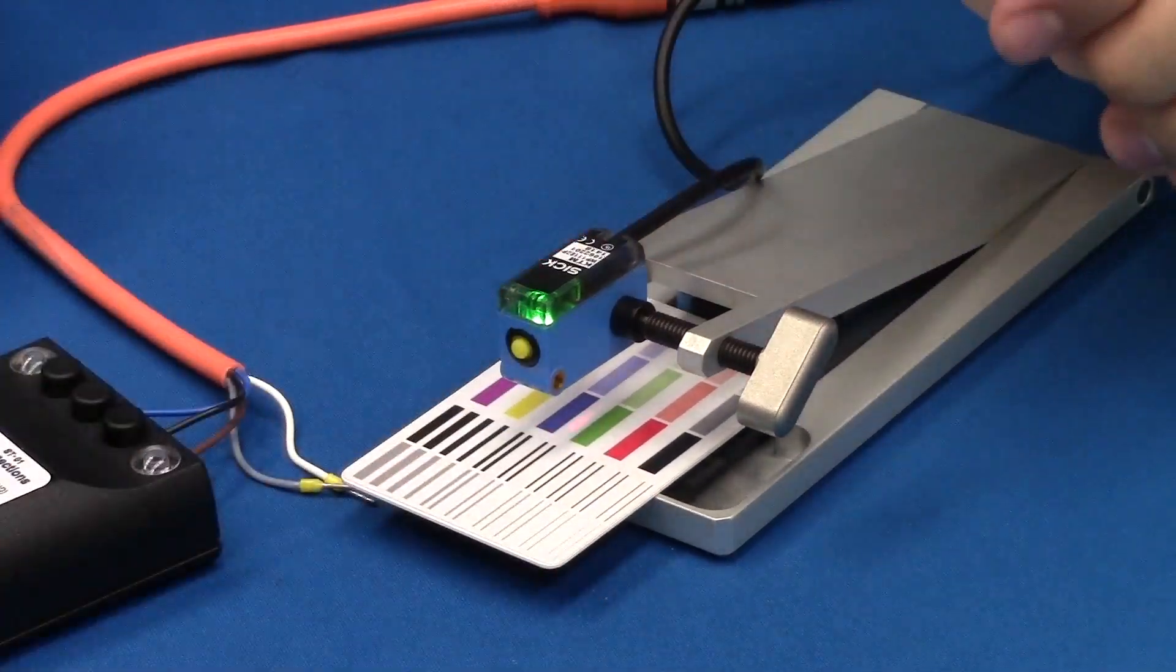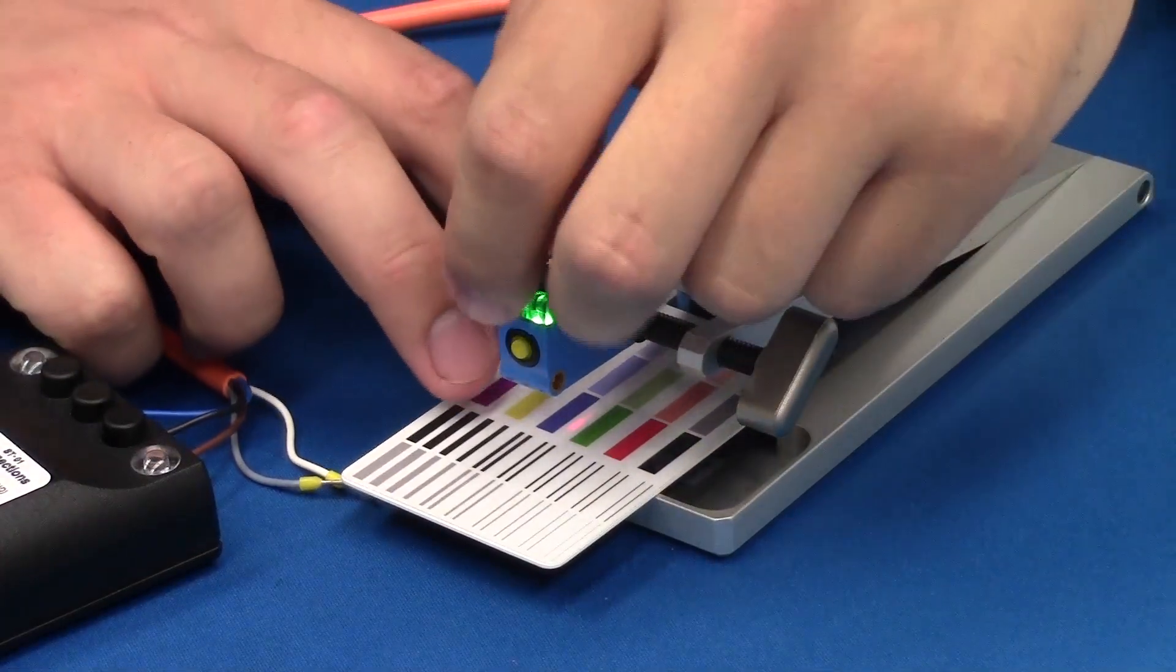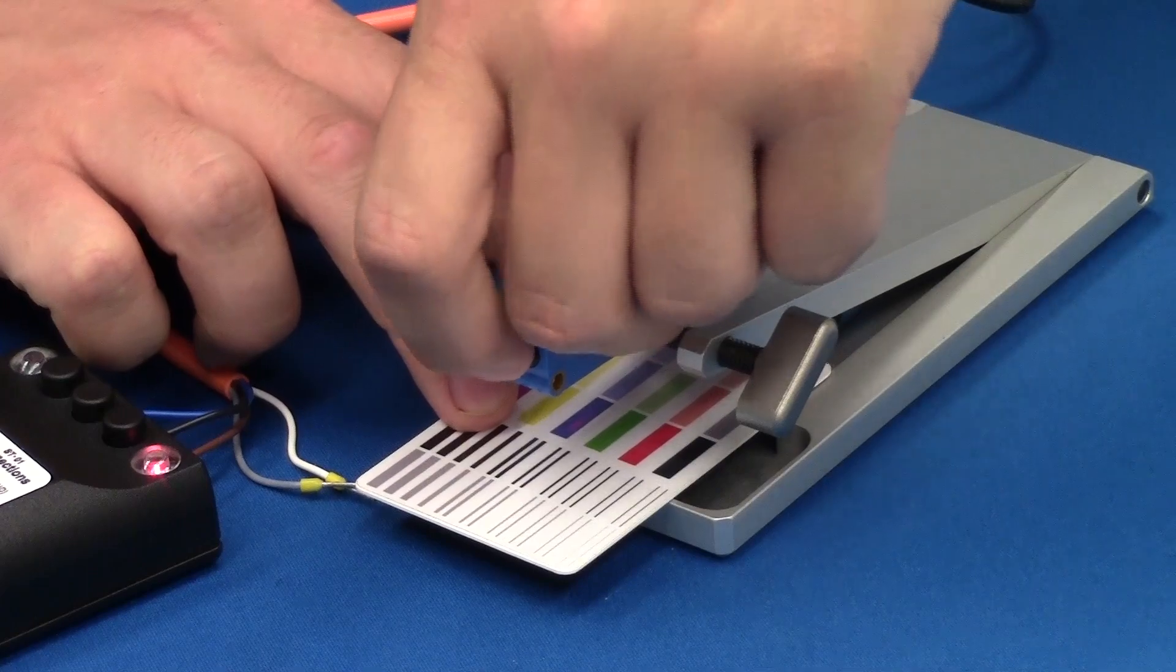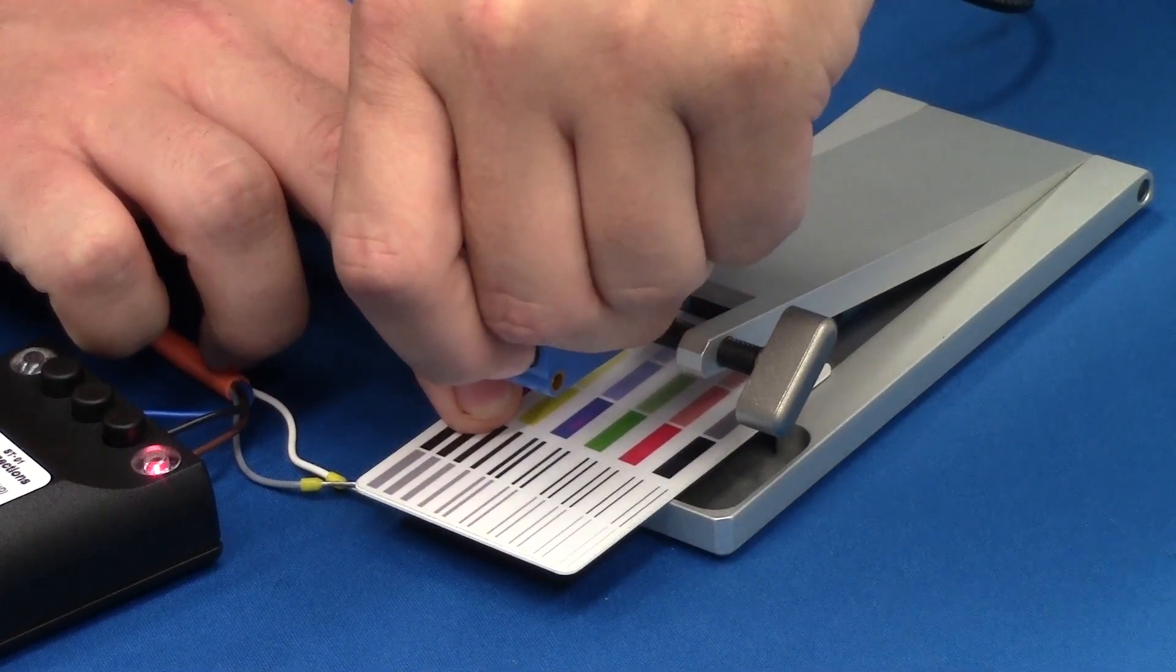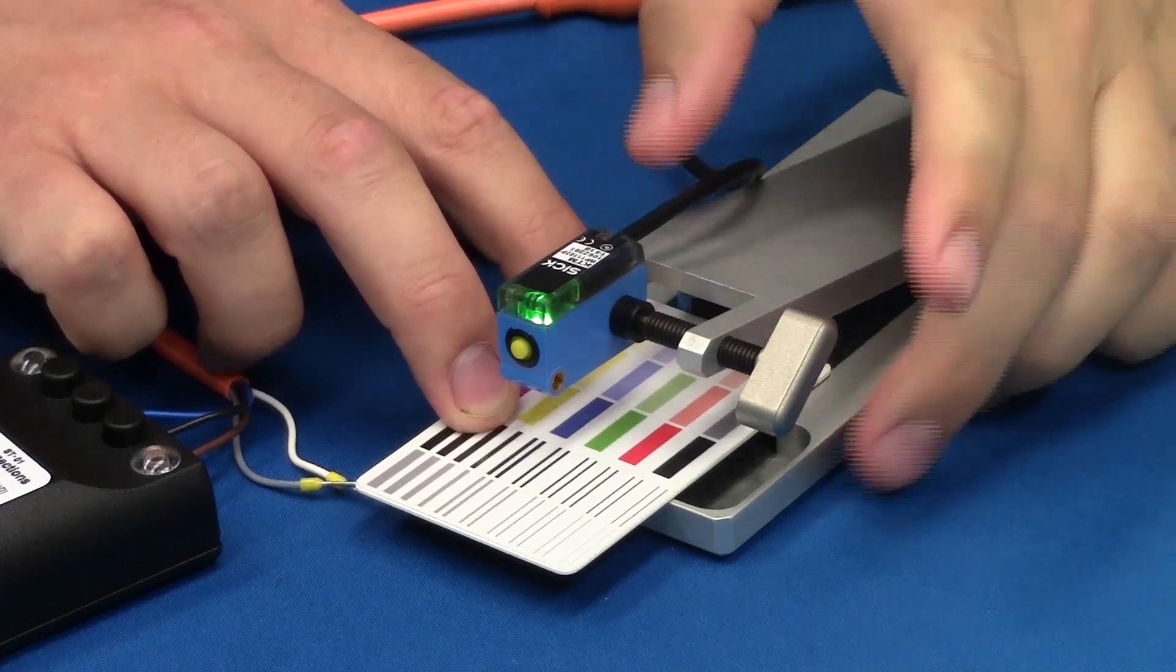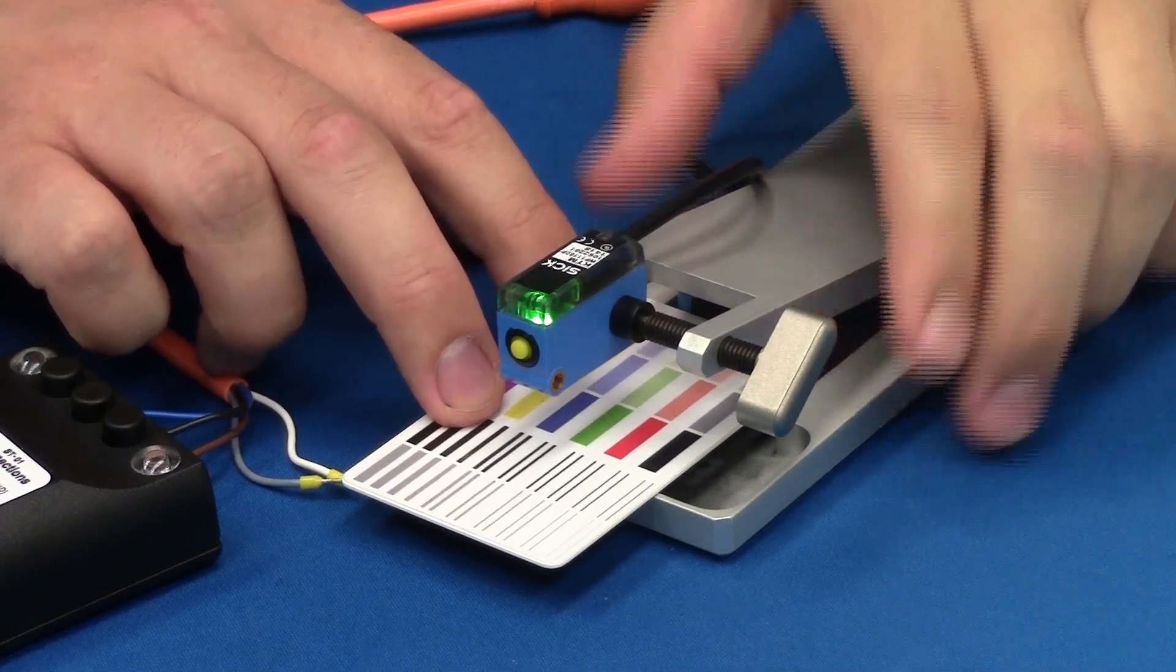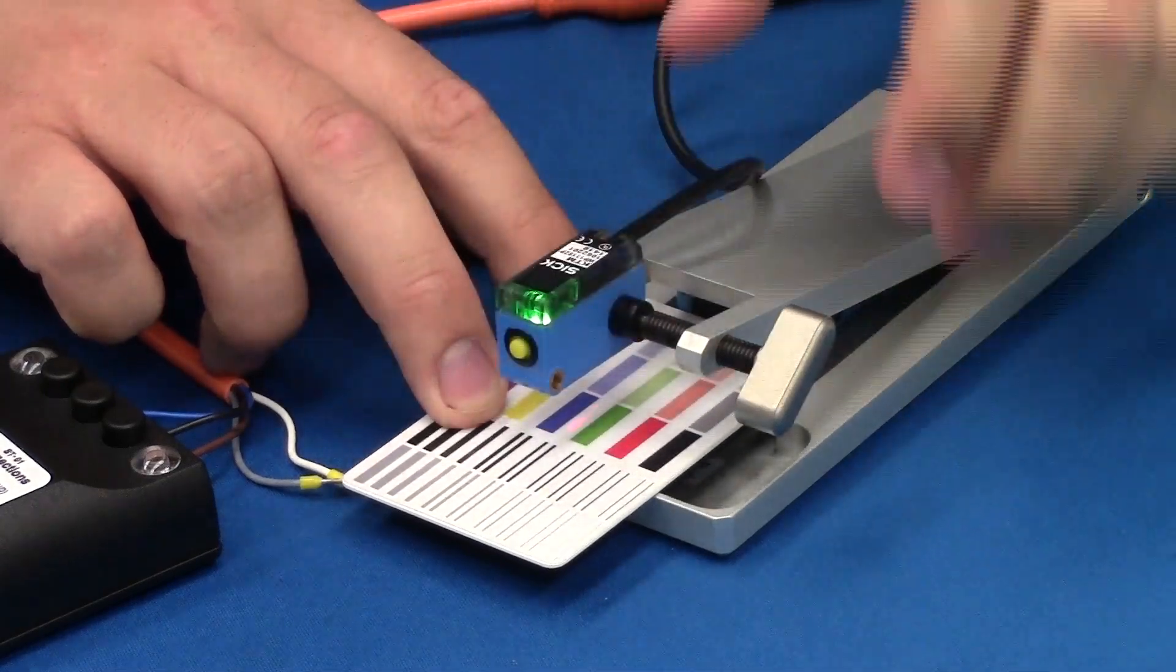Now let's start by demonstrating the static teach mode. To statically teach the KTM sensor, first we move to the contrast mark that we want to see. We push and hold the teach button for one second. Then we have the LED flashing slowly to show that it's in teach mode. We then move to the background and push the teach button once again.